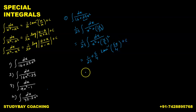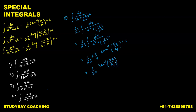Simplifying further, 1/25 times 5/4 cancels down to 1 upon 20. So the final answer is 1 upon 20 times tan inverse of 5x upon 4, plus c.